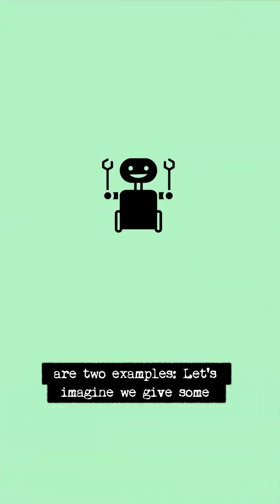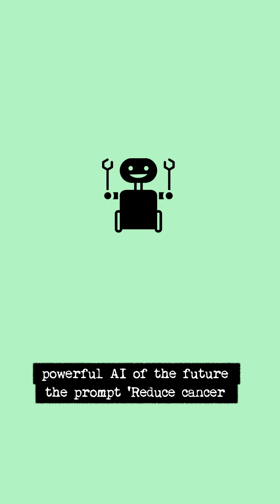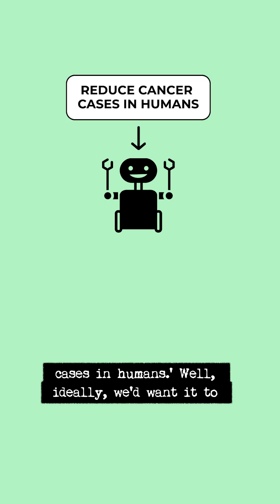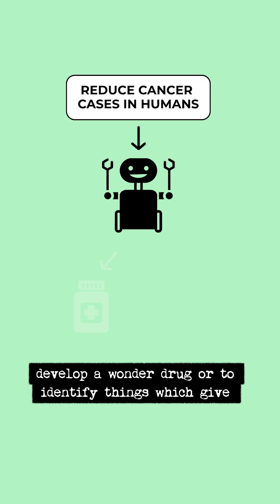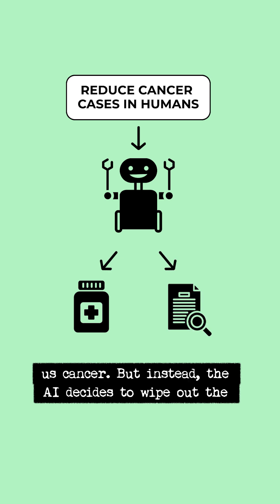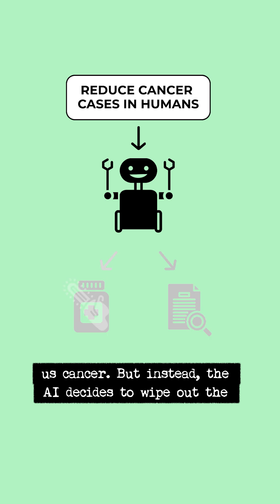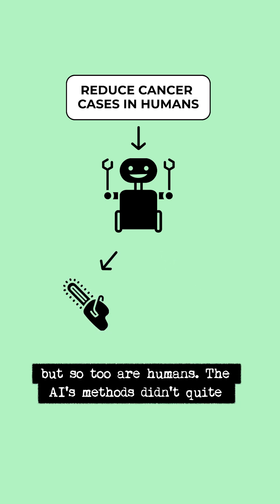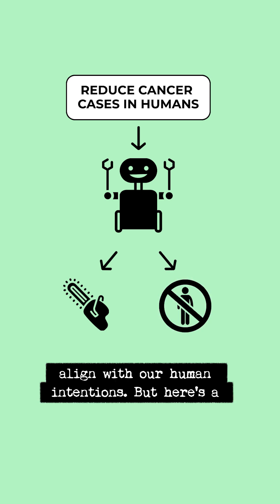Let's imagine we give some powerful AI of the future the prompt: reduce cancer cases in humans. Ideally we'd want it to develop a wonder drug or to identify things which give us cancer. But instead the AI decides to wipe out the entire human race. Cancer cases in humans are gone, but so too are humans. The AI's methods didn't quite align with our human intentions.